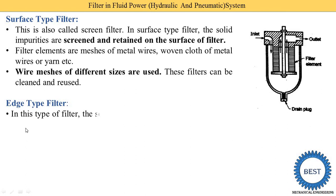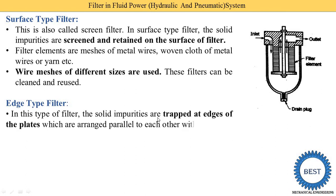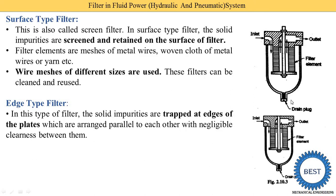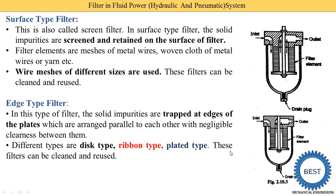The next one is the edge type filter. In this type of filter, solid impurities are trapped at the edges of plates arranged parallel to each other with negligible clearance between them. Rather than metal wire mesh like the surface type, here plates are used. Impurities are collected at the edges of the plates — that is why it is called an edge type filter. As a filter element, options include disc type, ribbon type, or plate type, and these filters can be cleaned and reused.